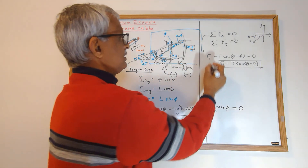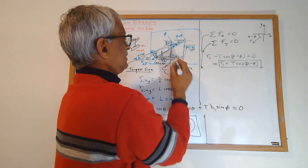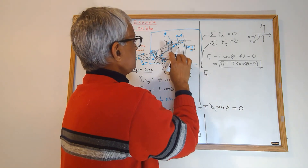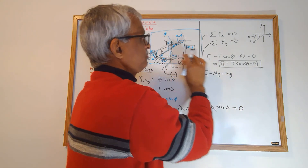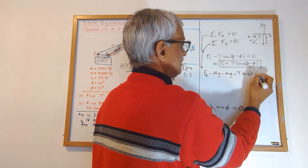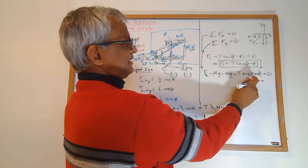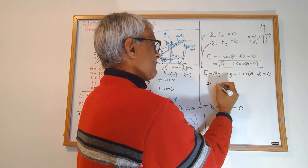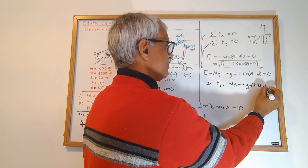For the y-direction, summing forces: F2 minus MG minus mg minus T sine(theta minus phi) = 0. Since tension is already known, we get F2 = MG + mg + T sine(theta minus phi). That gives us the y-component of the force at A.